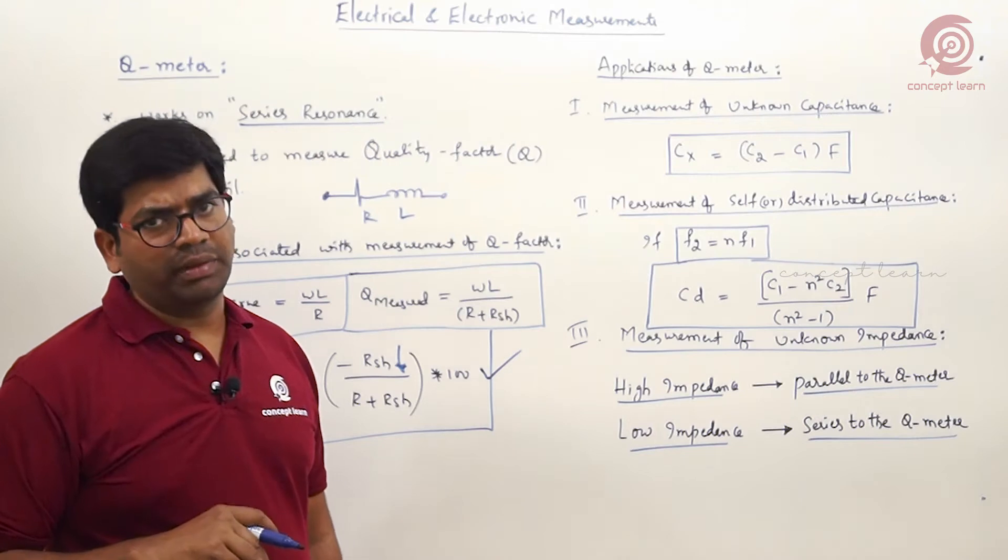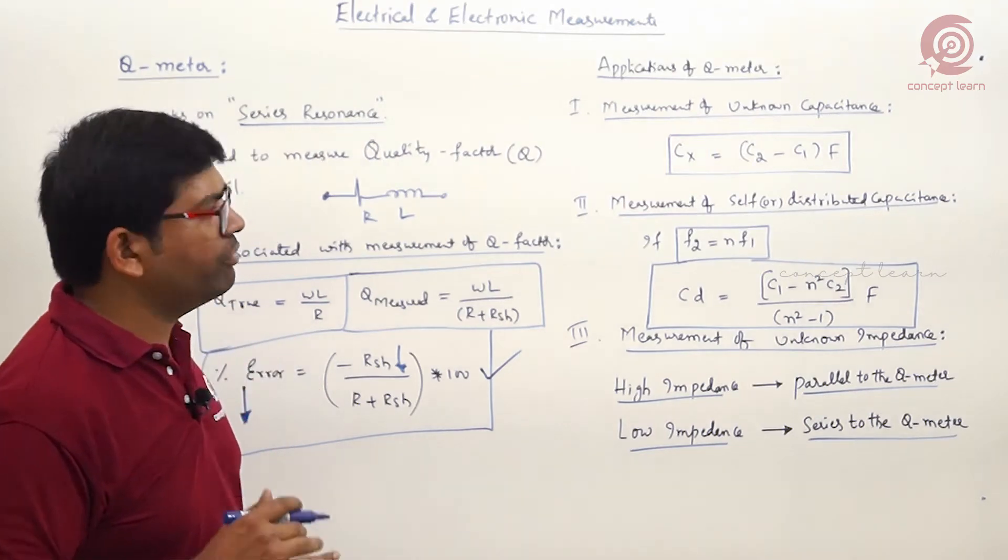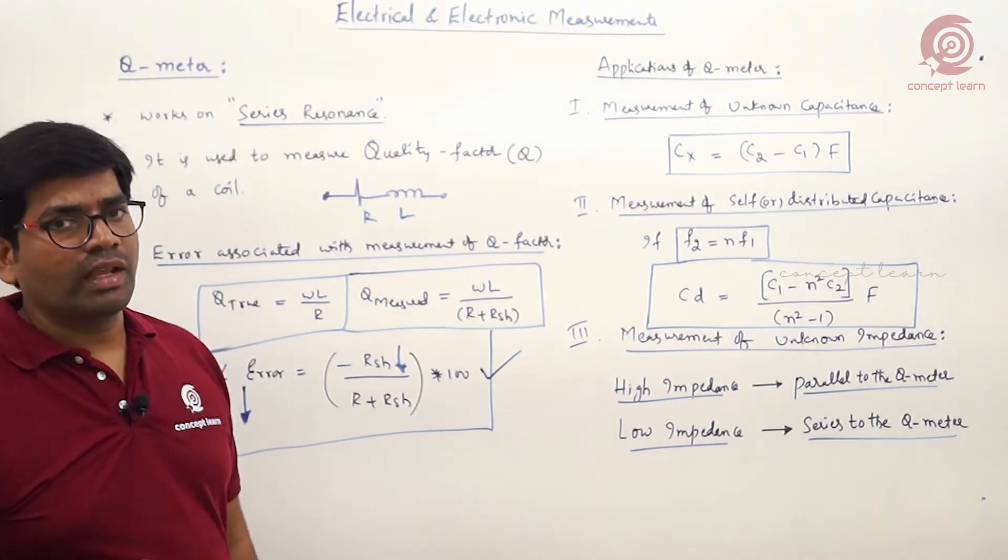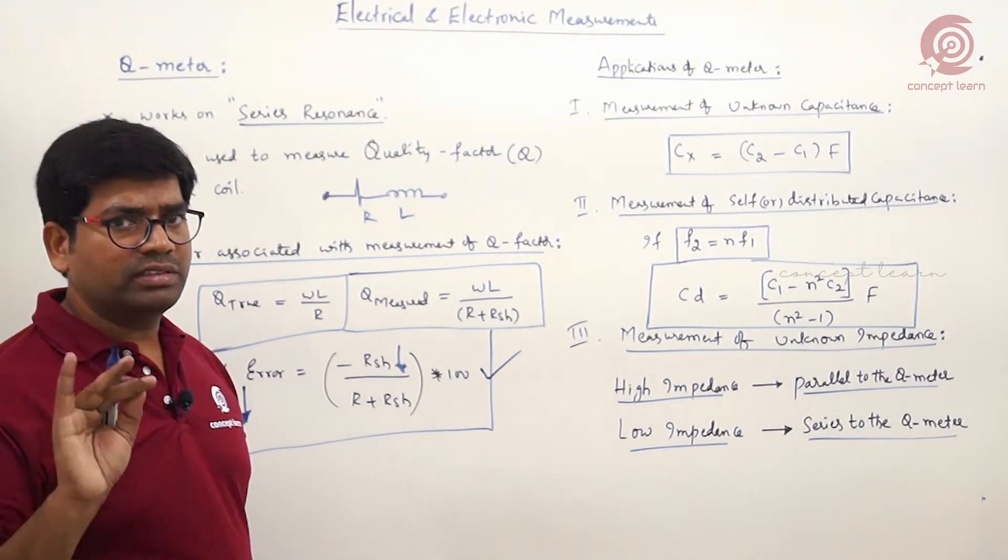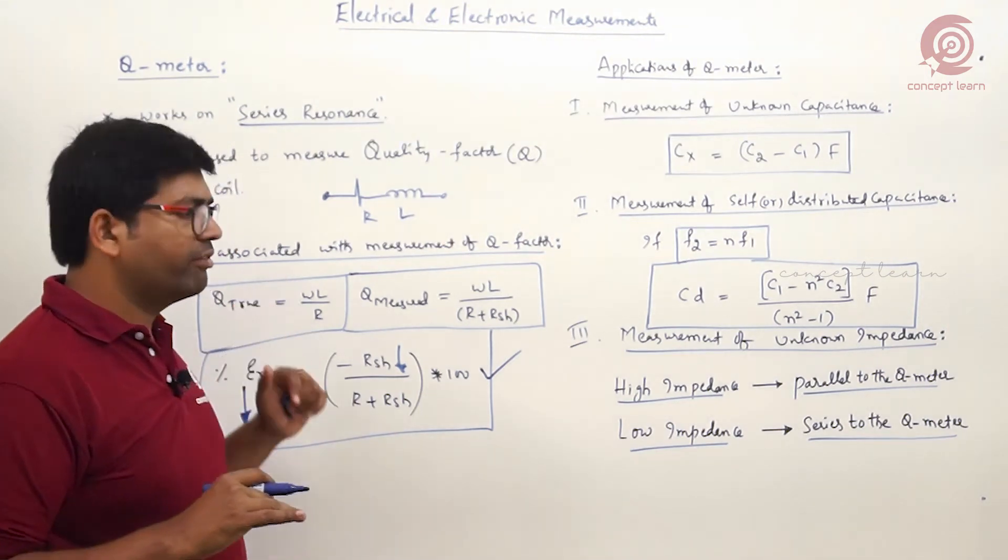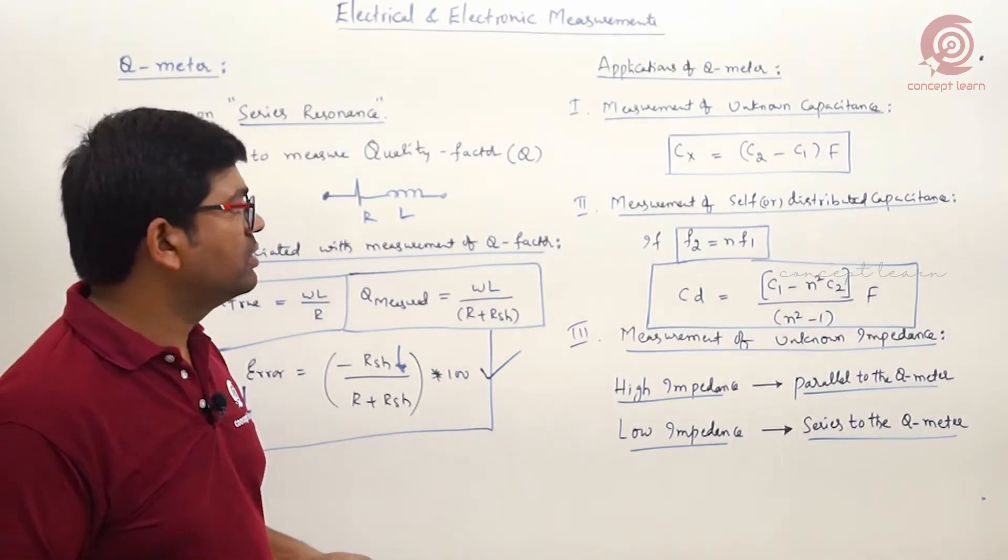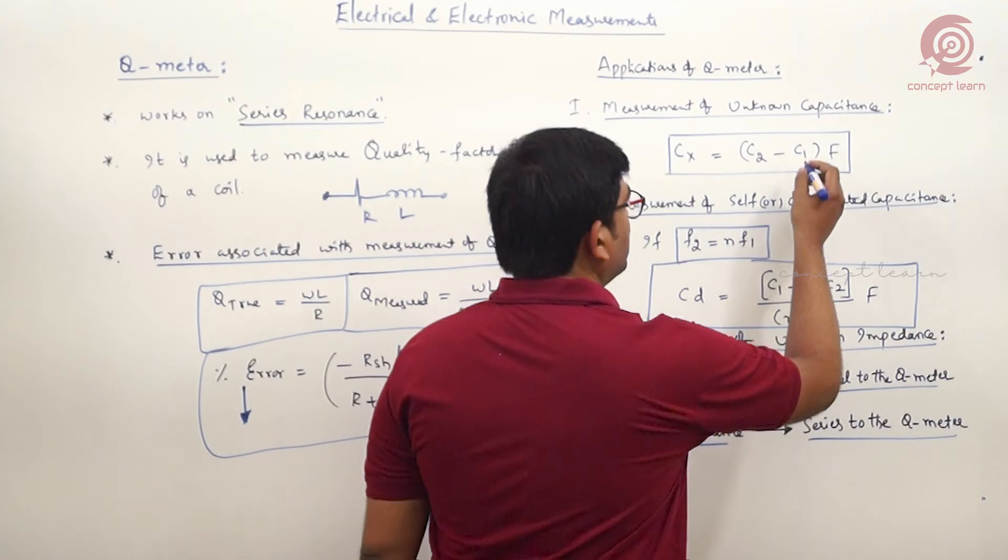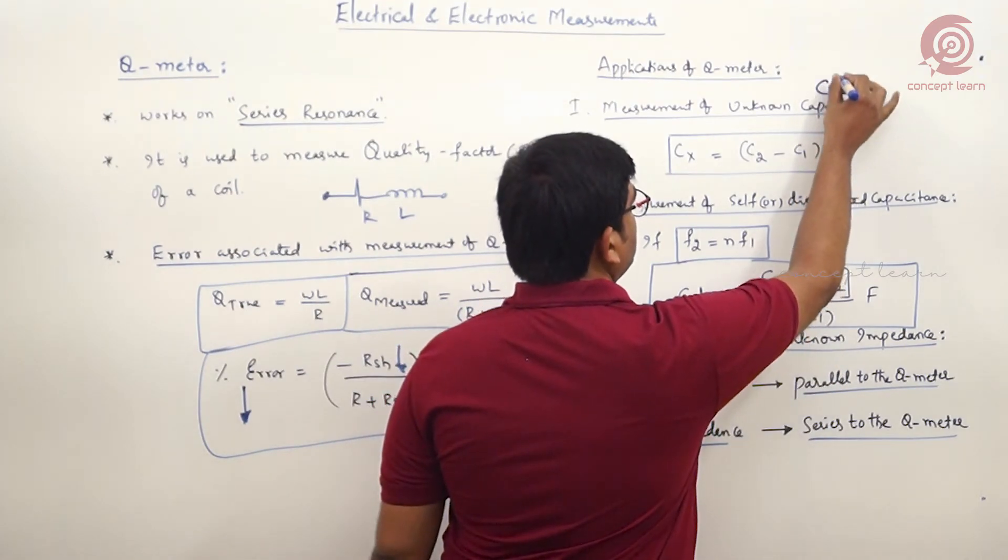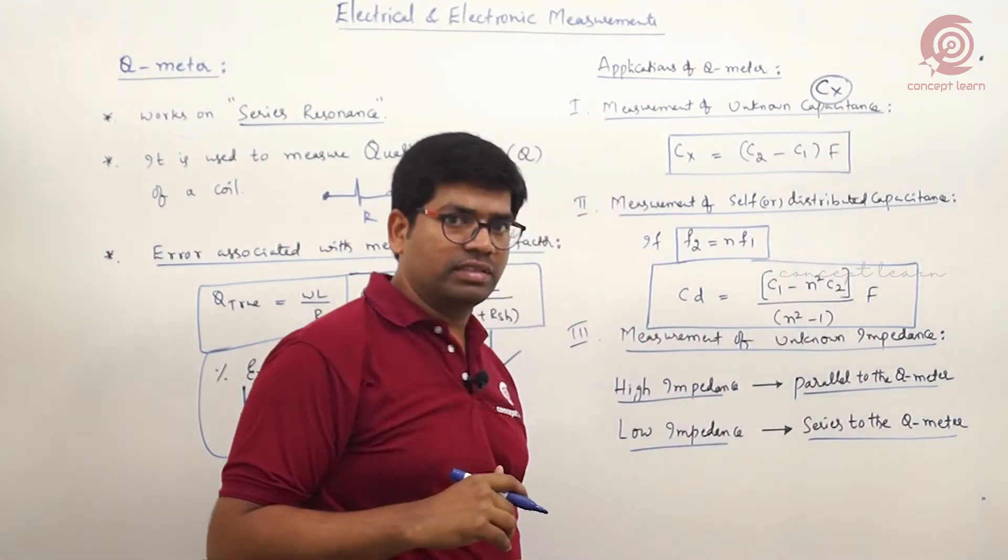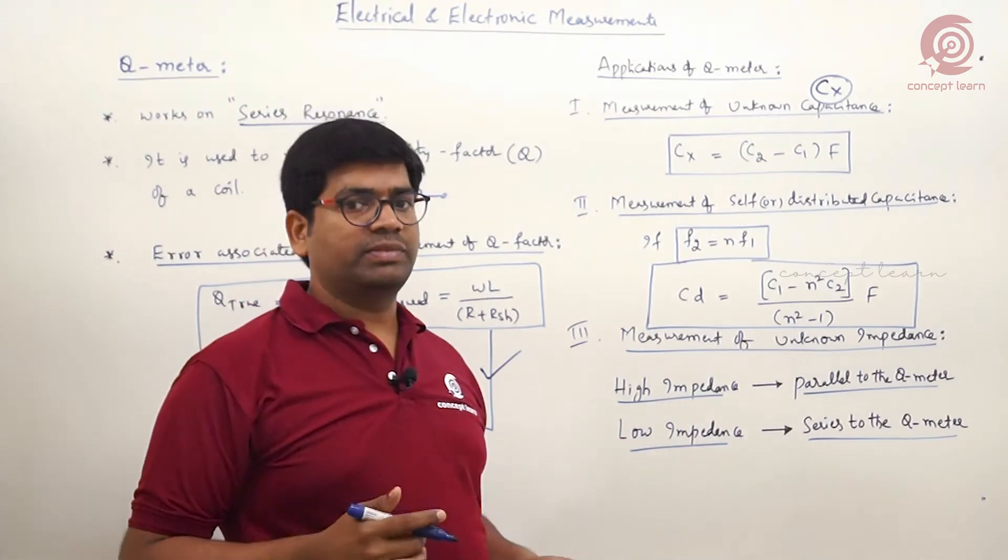This is one point. If you follow with applications point of view, Q meter is not only to measure the quality factor of a coil. We can even measure some other quantities. You can even measure unknown capacitance. I am assuming Cx is the unknown capacitance, and if you do the experiment...